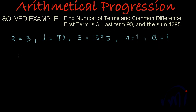So what is the formula for the last term? Last term we write as l equal to a plus (n minus 1)d. And what is l? l is 90. a is 3. n we have to find and d also we have to find, that means this plus (n minus 1)d will remain as it is.